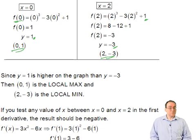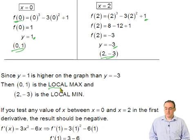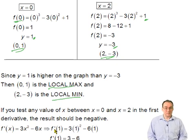How do you establish which one is which? Well, since y = 1 is higher on the graph than y = -3, then (0,1) must be the local max, and (2,-3) has to be the local min, as we saw on the graph earlier on.